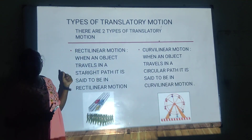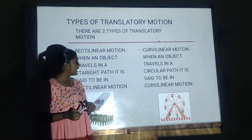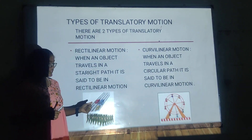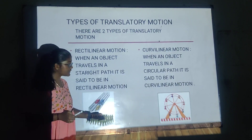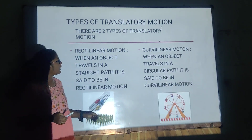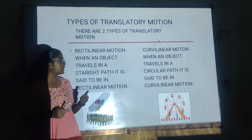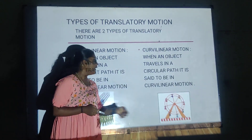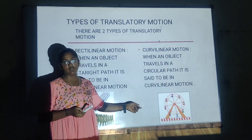Rectilinear motion is when an object travels in a straight path. This image shows that the body is travelling in a straight path. Curvilinear motion is when an object is travelling in a circular path. This image represents curvilinear motion.